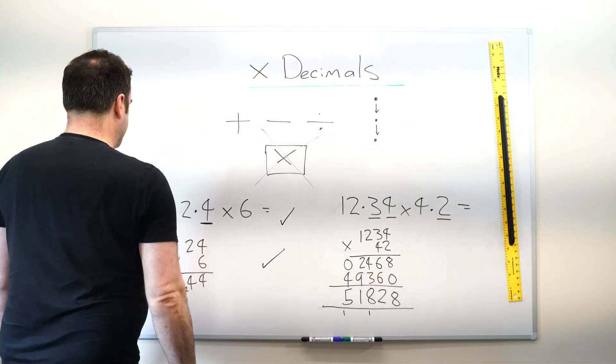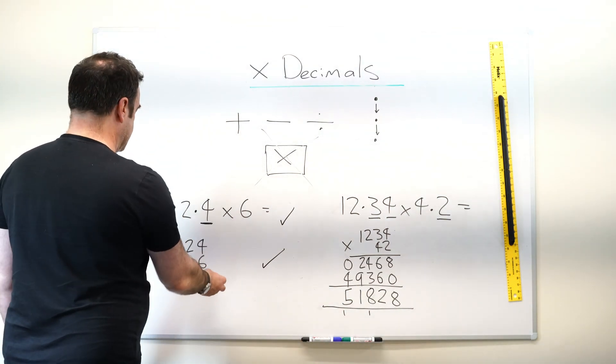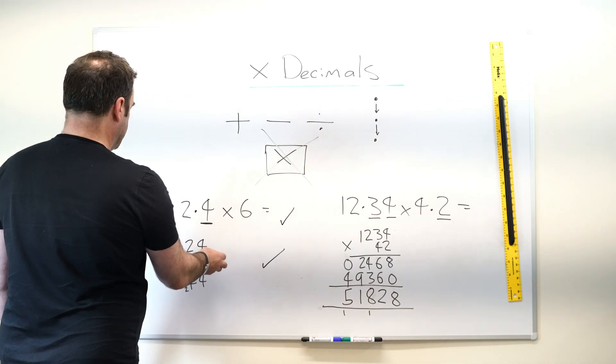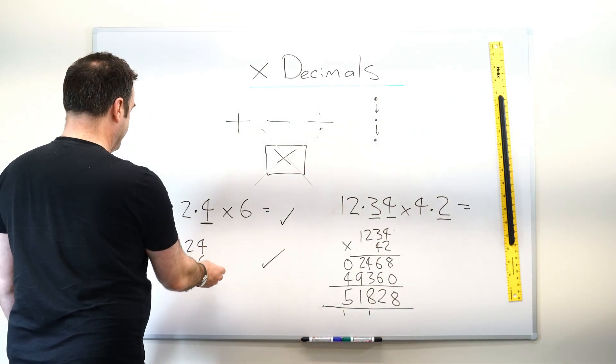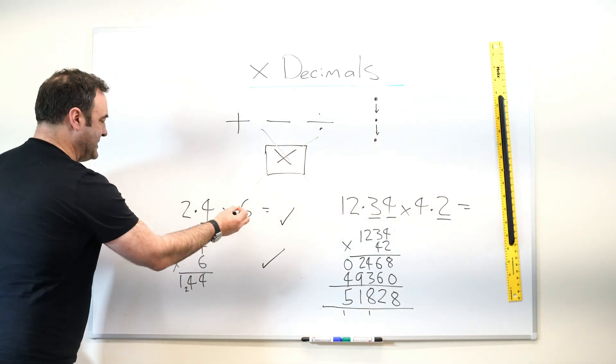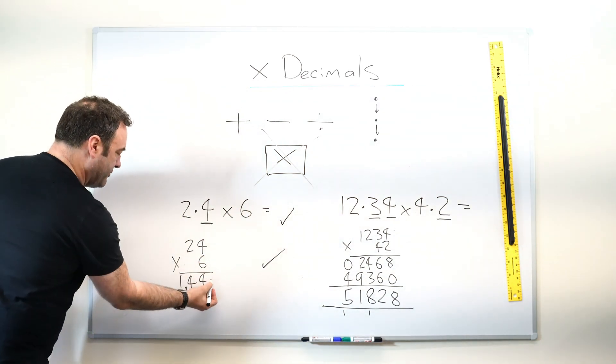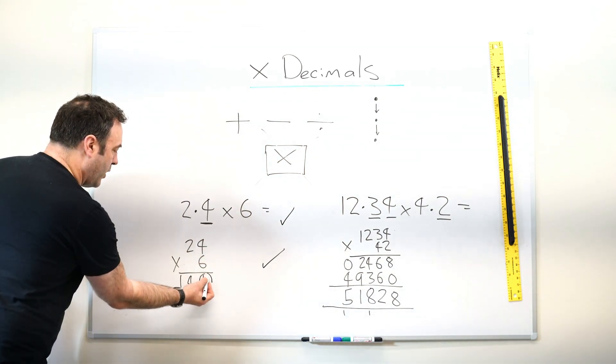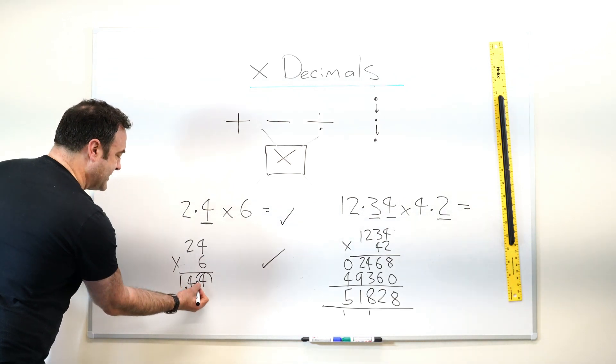We do our multiplication column, so 4 times 6, 24, 2 times 6, 12, plus a 2, 14. Then we've got one decimal place here. This is the important part. We start from the right, and we do one jump back. So the decimal point gets inserted here.